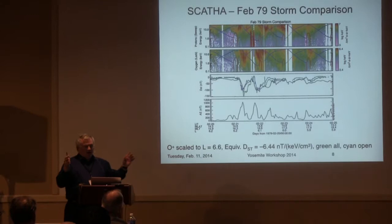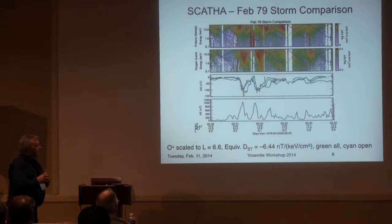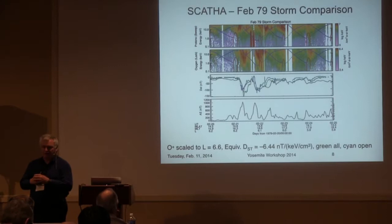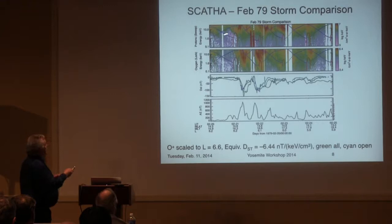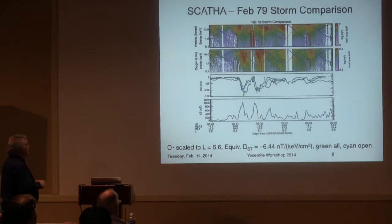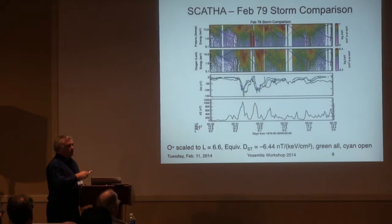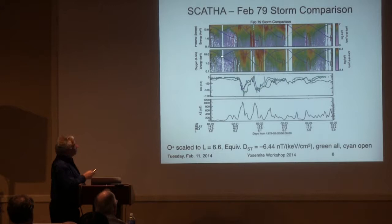This data is from SCATHE. I worked at Lockheed Palo Alto Research Labs in the late 1970s on the spacecraft charging at high altitude ion composition data shown here. This is a Lockheed ion mass spectrometer covering 100 eV to 32 keV, showing differential energy flux plotted over about six days for both protons and oxygen. The colors are chosen so that the same color red represents the same energy density integrated over the pass bounds of the instrument.